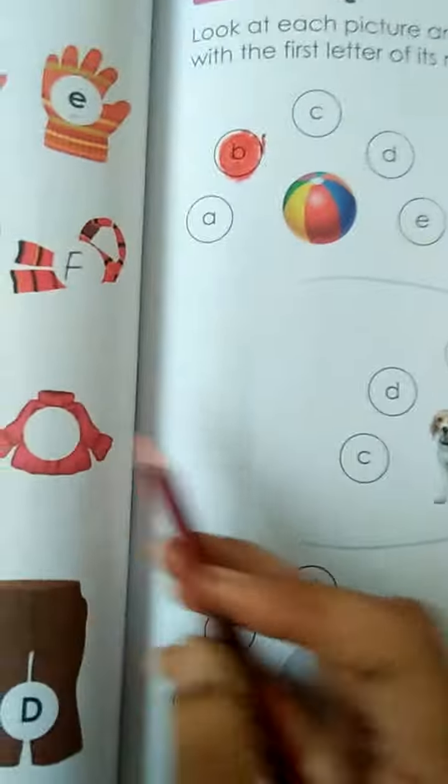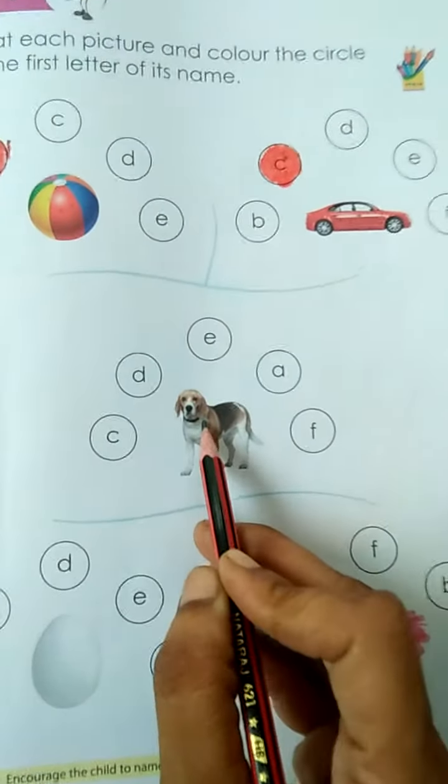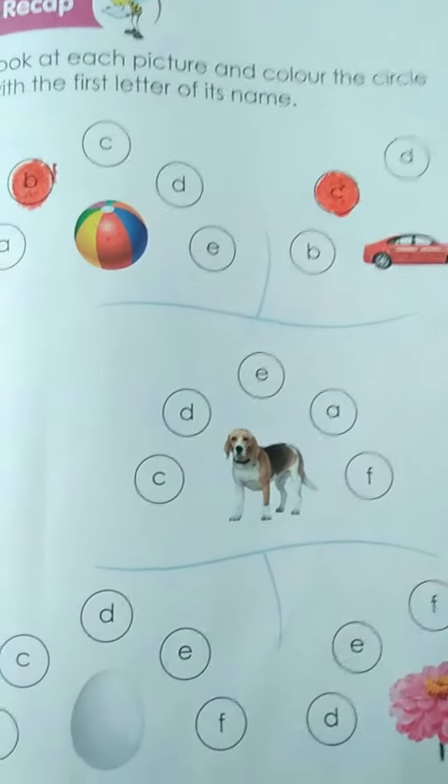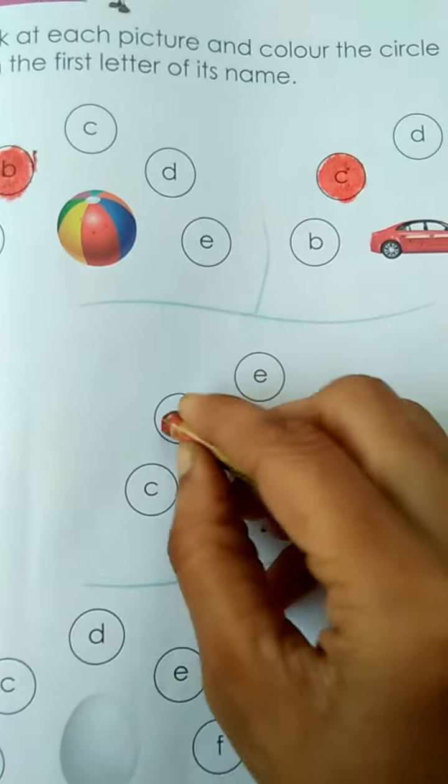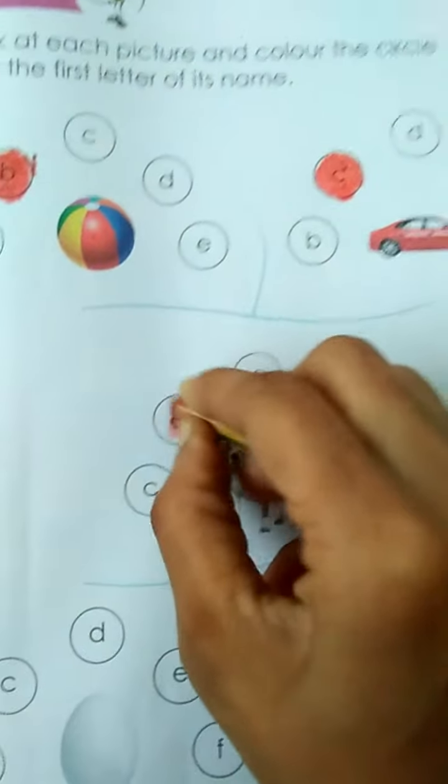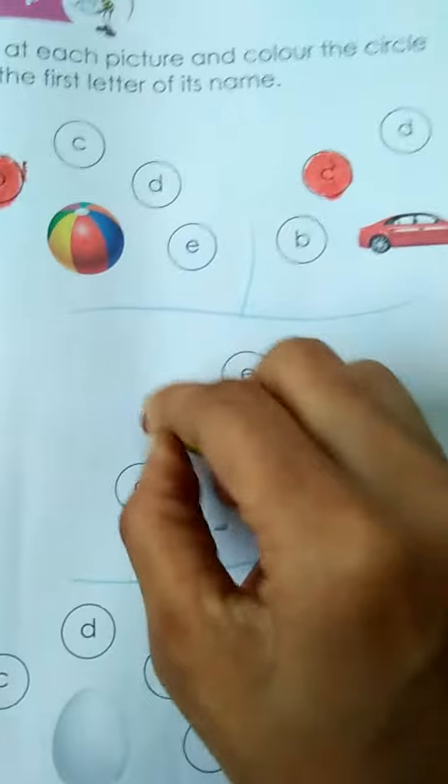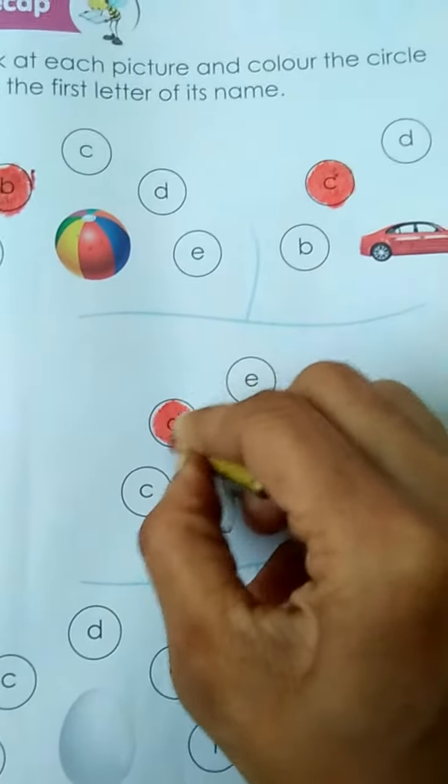Now which picture is this? Yes, this is a dog. Then you have to color in the circle of D like this.